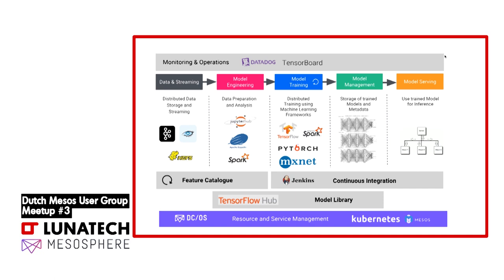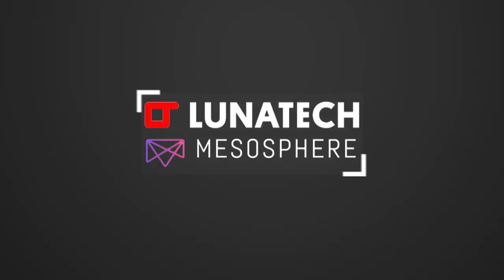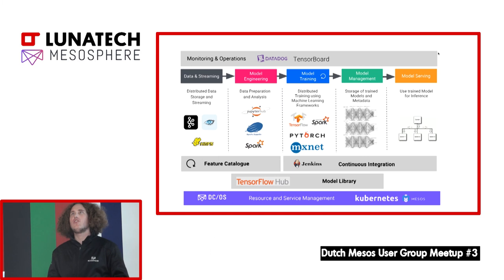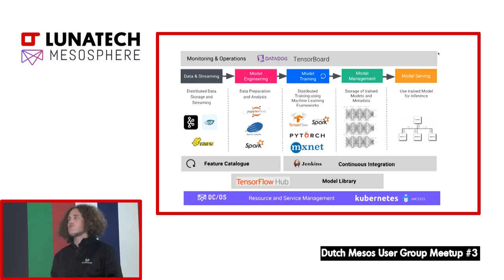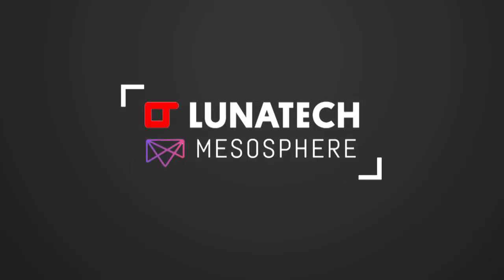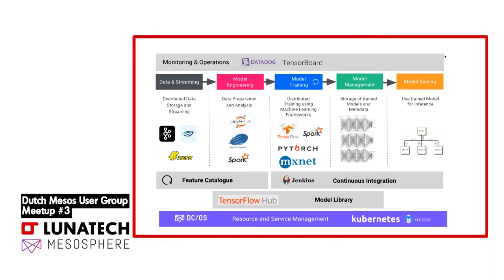If we want to share features our data scientists have developed — a feature, for example at Airbnb, is simply a representation of a user. The first data scientist who gets that raw dataset needs to clean up the user data and create a representation he can use. As that's typically 50 to 60 percent of a data scientist's workload, it really makes sense to share that — this is why we have a feature catalog. Similarly, with trained models we also want to share and reuse them for later training runs, so-called transfer learning. We end up with a lot of components to build such a pipeline.